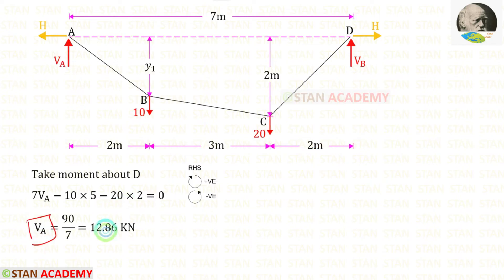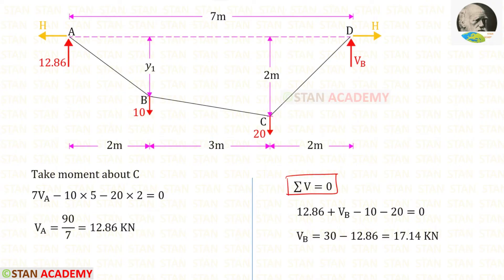Finally for VA we will get 12.86 kN. Now let us apply the rule sigma V equals 0 and find VB. VA and VB are acting upwards so both of them are positive. These two loads are acting downwards so both of them are negative. Finally for VB we will get 17.14 kN.